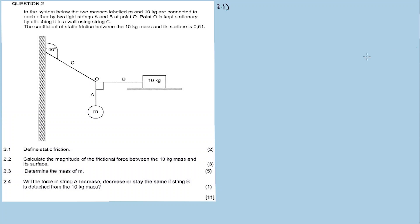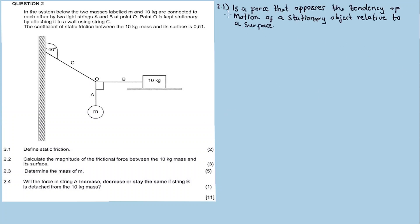Question 2.1: Define static friction. Static friction is a force that opposes the tendency of motion by a stationary object relative to the surface. That covers the difference between static friction and kinetic friction.